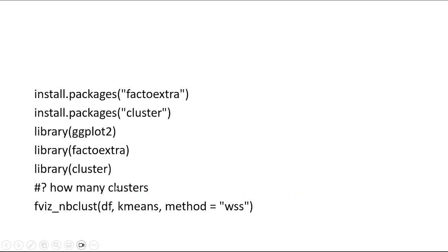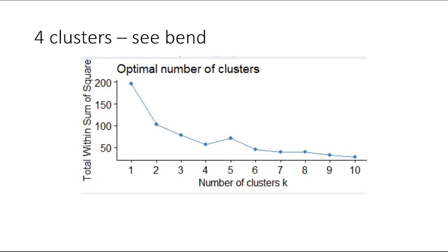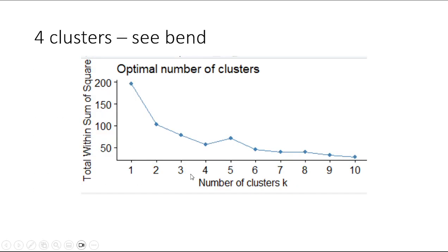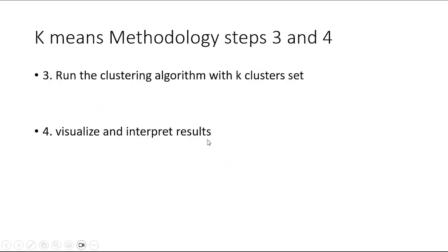When you run the scree plot, you look at the line going down, and there's a point when it bottoms out — this is sometimes called 'elbowing.' In this case that happens at four, which tells you that you should use four clusters. You can see the line goes down, down, down, and at four it's basically bottomed out. This one actually bubbles up a little at five, but don't worry about that — four is the number of clusters to use.